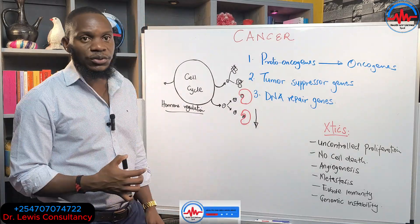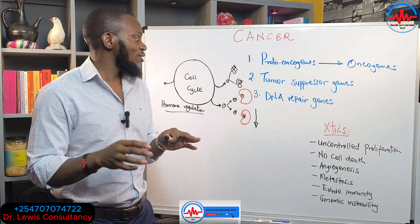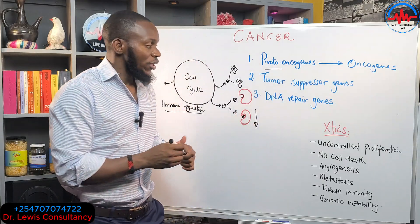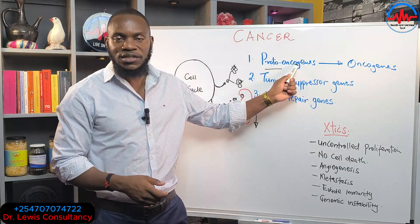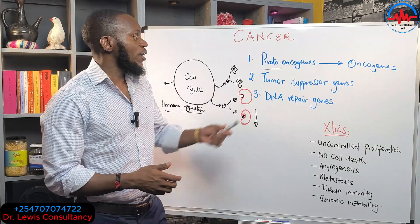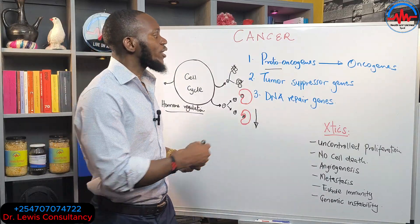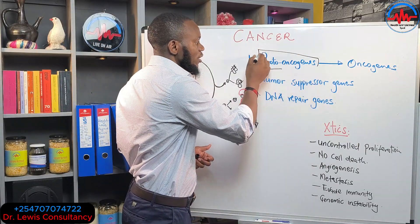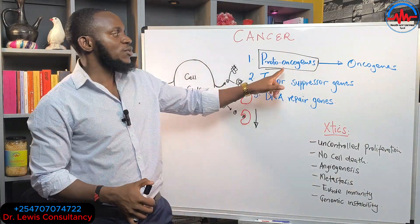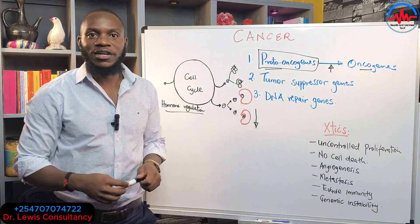The body is designed so perfectly because you have three types of genes that regulate everything. First, we have proto-oncogenes. When you hear the word 'onco,' just know it relates to cancer — oncogenes activate mutations and cause cancer. But proto-oncogenes are the ones that actually prevent you from getting cancer. However, the same lifestyle activating mutations is also what converts proto-oncogenes into active oncogenes — and now you have cancer.